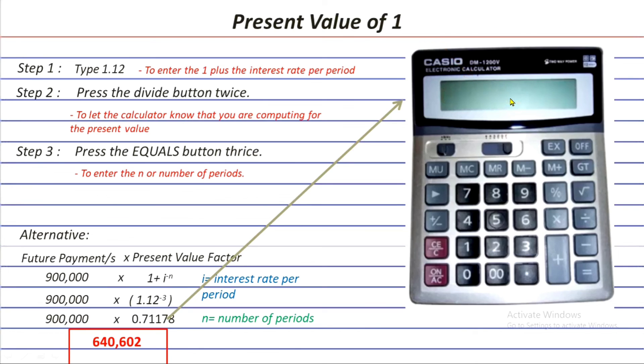And finally, if you press it for the third time, then you will get the present value factor that we needed for our example already.